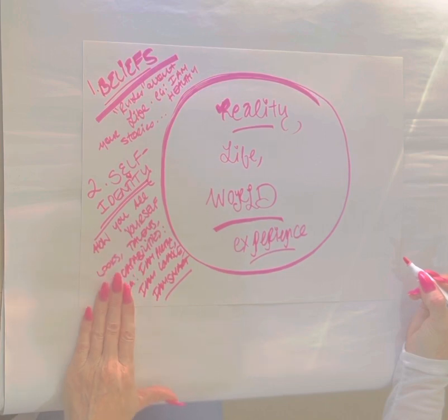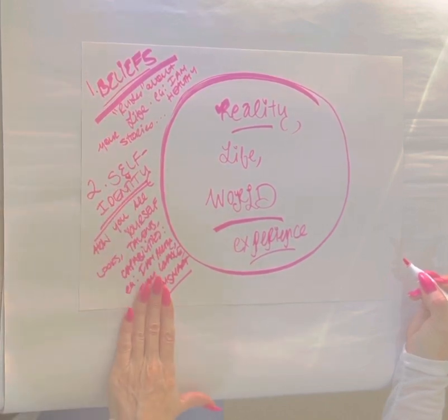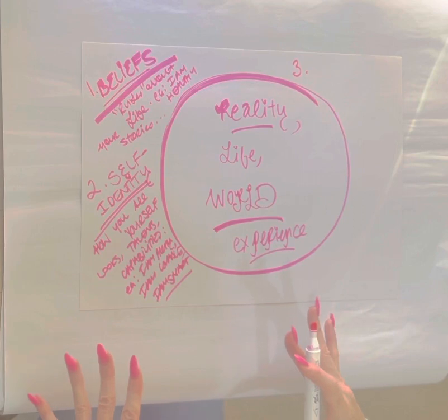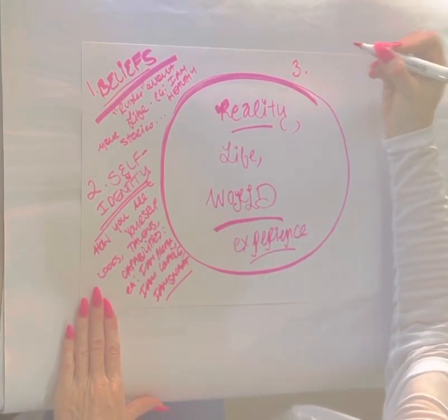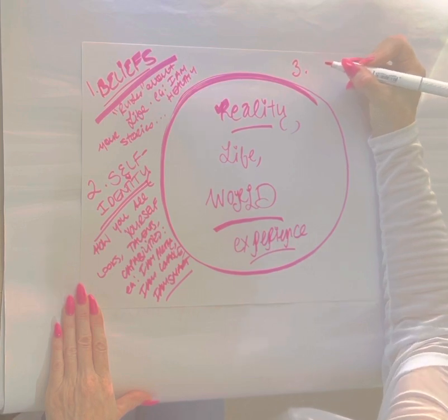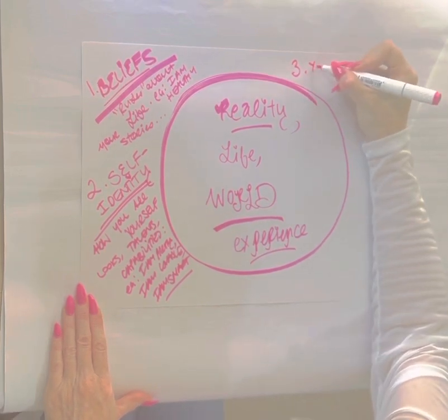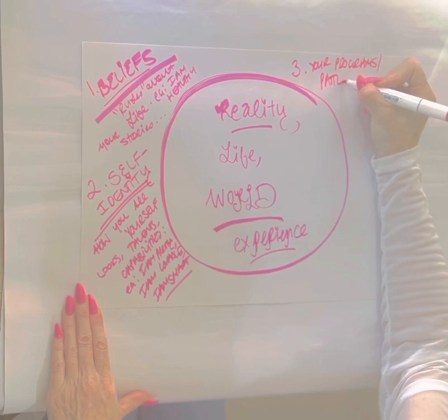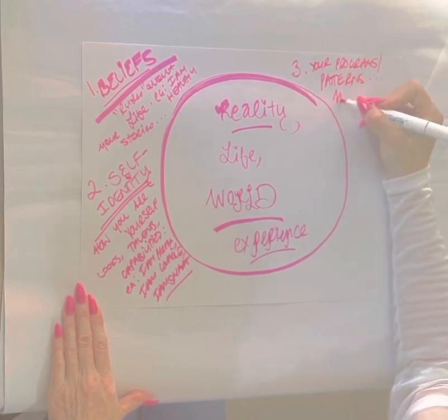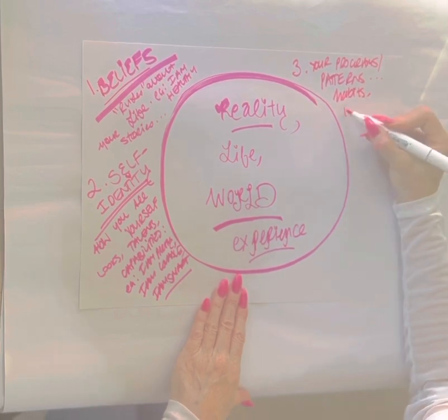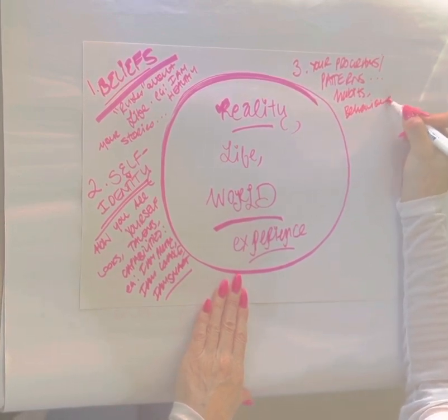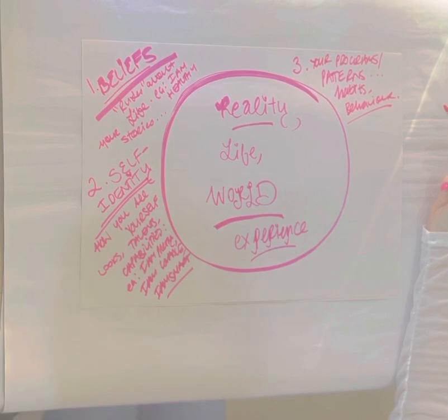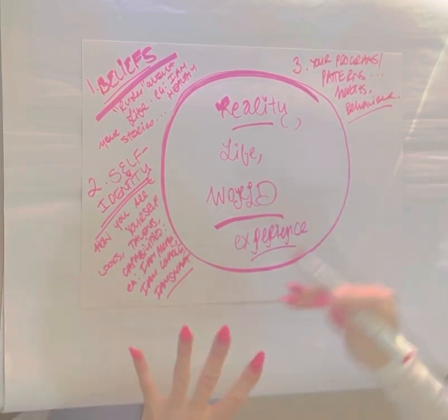You can change this, again, mostly from beliefs, early childhood, what other people have said to you. And then it becomes number three. You can see how a lot of these can be incorporated into one another as well. I'm just listing them off now and I will be refining this. Three, your programs, you can also call patterns of behavior. So programs and patterns, let's just say programs and patterns, which are essentially your habits, your behavior, which also comes really from beliefs and self-identity. Your programs, your patterns.